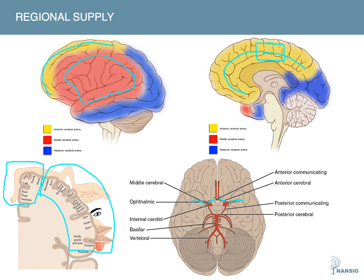The motor cortex varies in which artery supplies each corresponding region — that's important to note. Moving on to the posterior cerebral artery: it corresponds to the blue region, supplying the inferior aspect of the temporal lobe and most of the occipital lobe, which is obviously very important for vision.